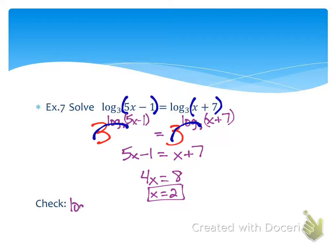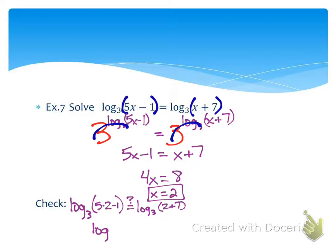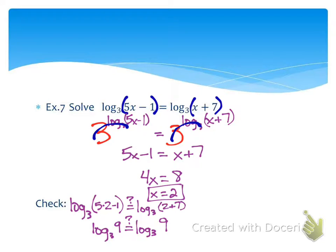We've got to check this though. Starting over — I'm going to check log base 3 of 5 times 2 minus 1, and ask myself is it going to be equal to log base 3 of 2 plus 7? Log base 3 of 10 minus 1 — we're looking at 9 — is that the same as log base 3 of 9? We really don't need a calculator. Log base 3 of 9: 3 to what power gets us 9? It's 2. So this turns out to be 2 equals 2. This was not the no solution — we got our solution.